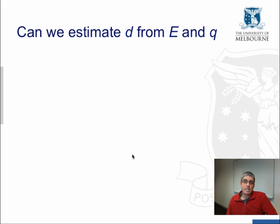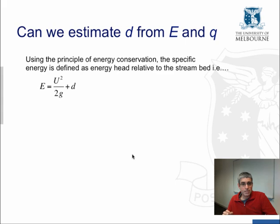So can we estimate depth if we know energy and discharge? First, let's define the specific energy, not the total energy, which is defined as the total energy relative to the stream bed, not some fixed datum. So that's E, which is the sum of the kinetic term, the velocity term U²/2g and depth d.